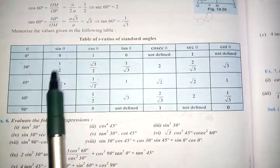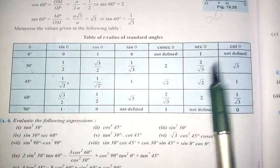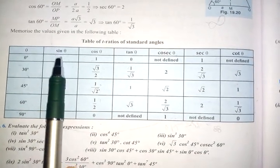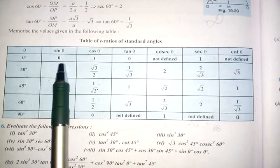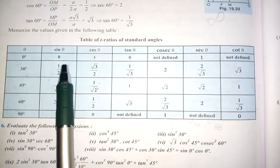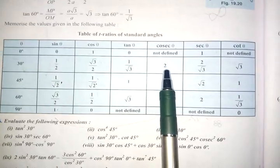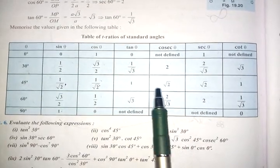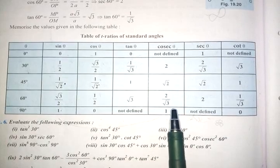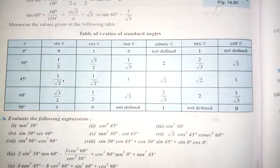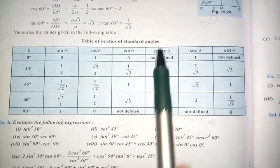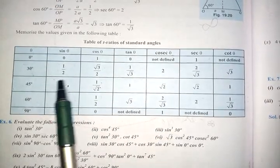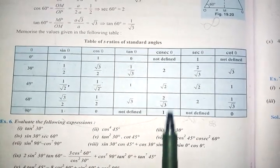When you remember these three columns, the remaining three are automatic. Cosec is the reciprocal of sin: opposite of 0 is not defined; 1/2 becomes 2; 1/√2 becomes √2; √3/2 becomes 2/√3; and opposite of 1 is 1. Whatever you have in the sine column comes in cosec but in reciprocal form: not defined, 2, √2, 2/√3, 1.